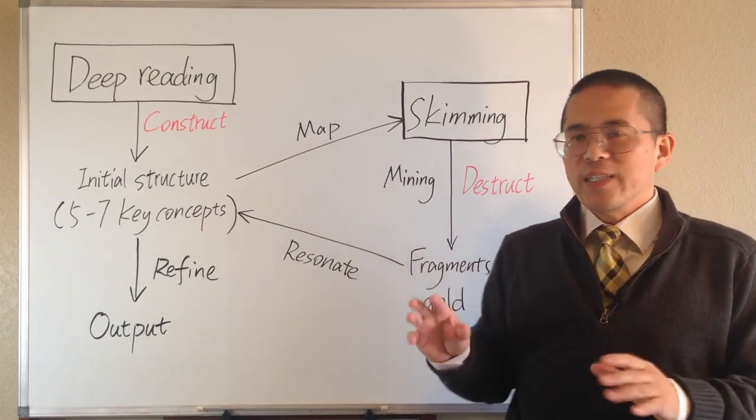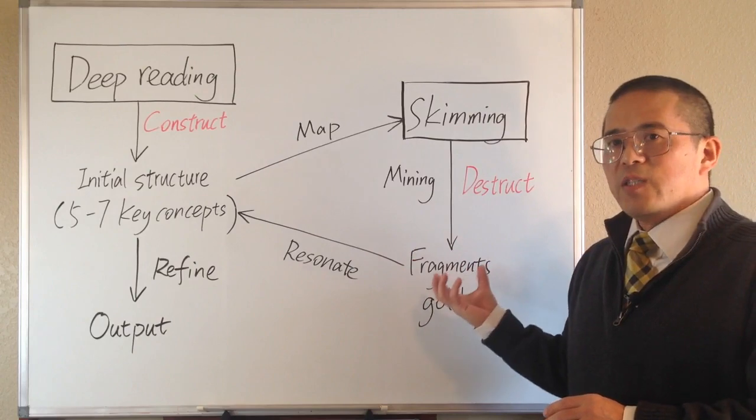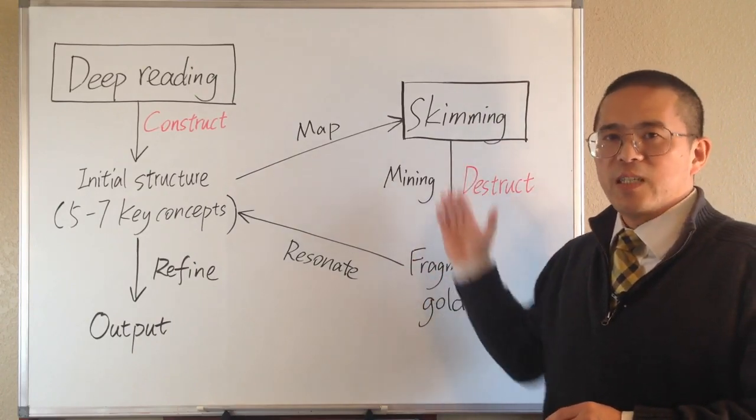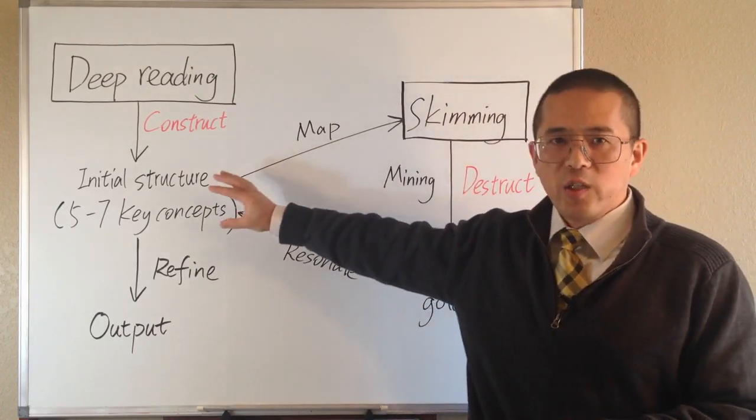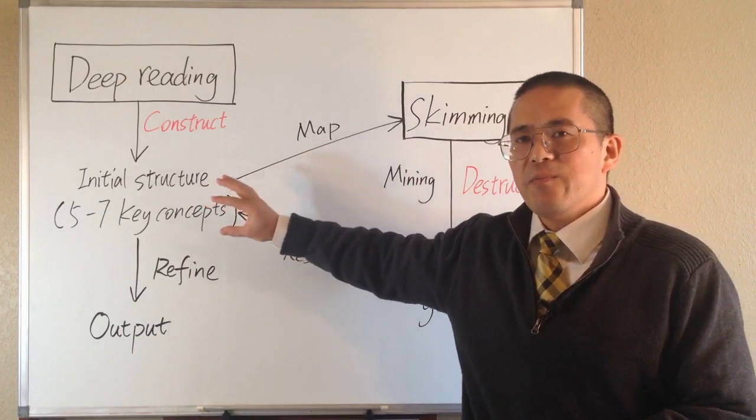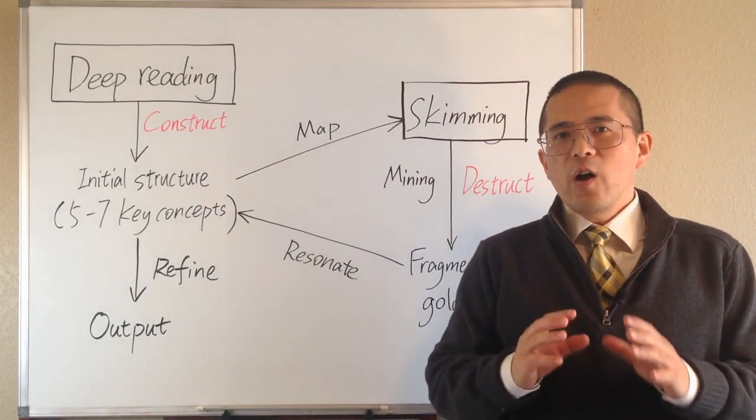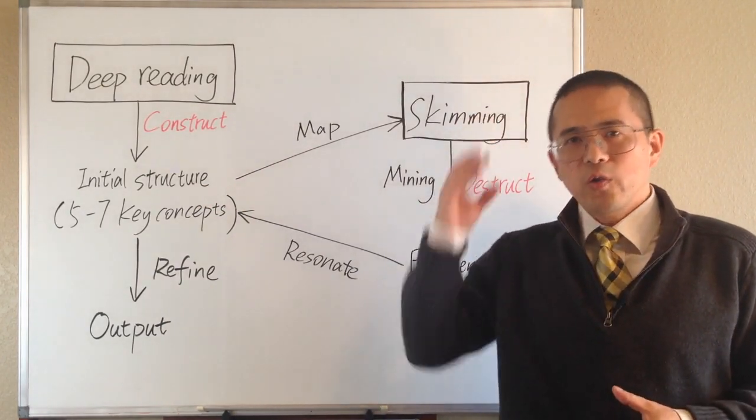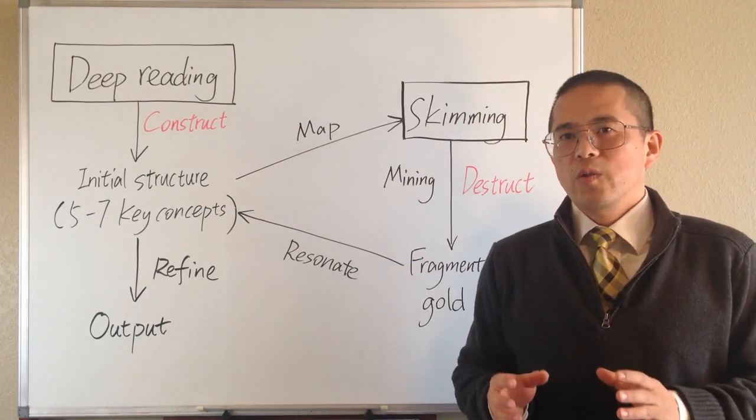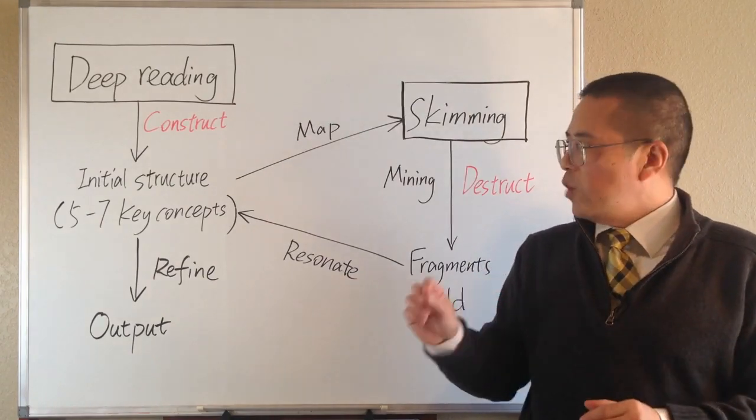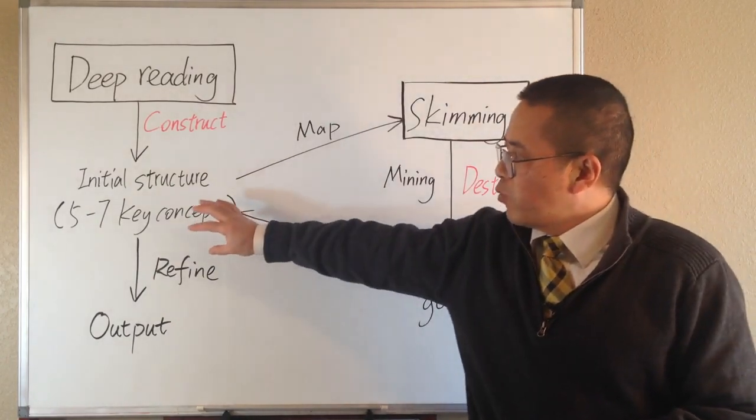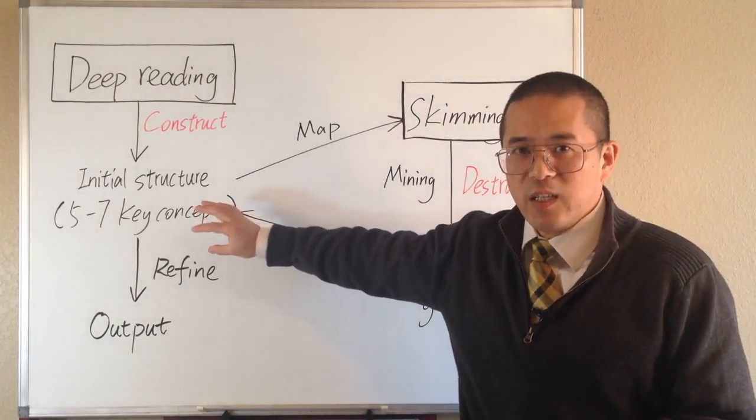What we are doing is like sticking the fragment information we obtained from skimming on the right location on the existing map of knowledge. When we are skimming, very often we may generate some of our own ideas. We should also take notes and write them down around the related key concepts.